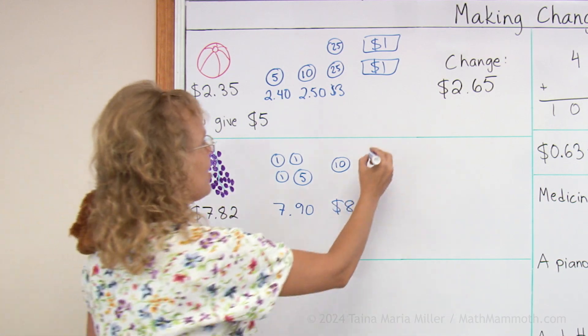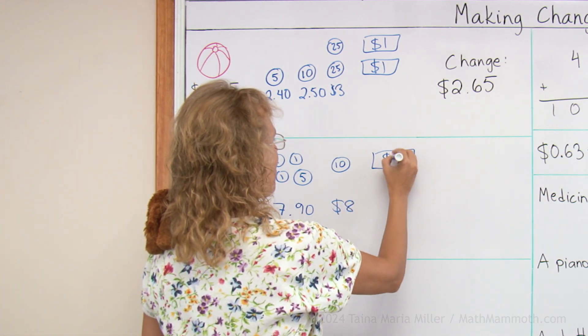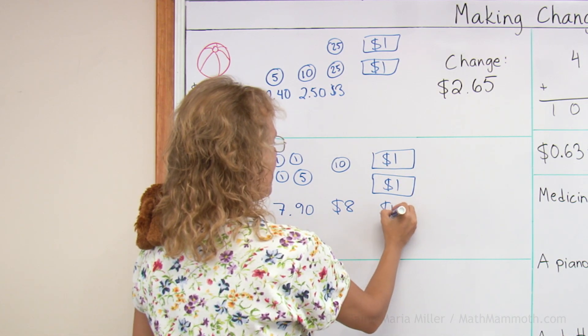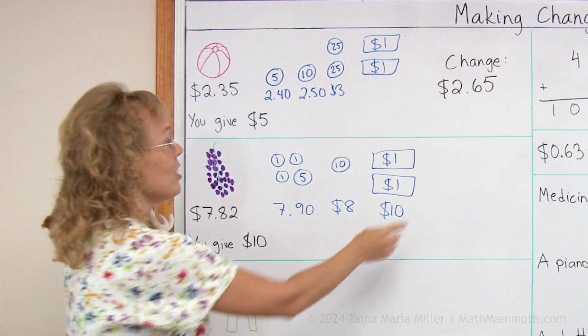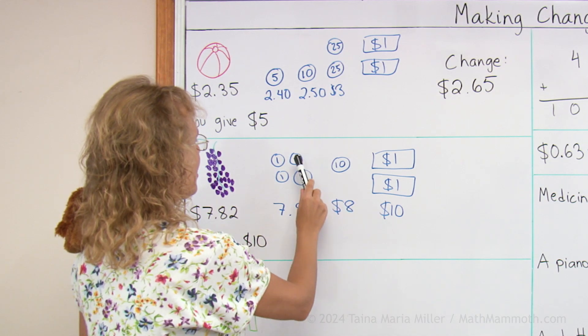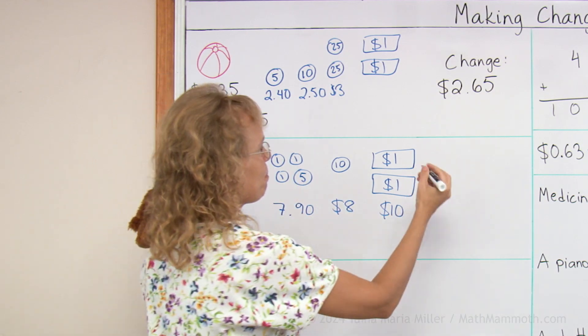And then again, I need $2.00. And that makes it $10.00. And the change is all that is here, $2.15, $16, $17, $18.00.